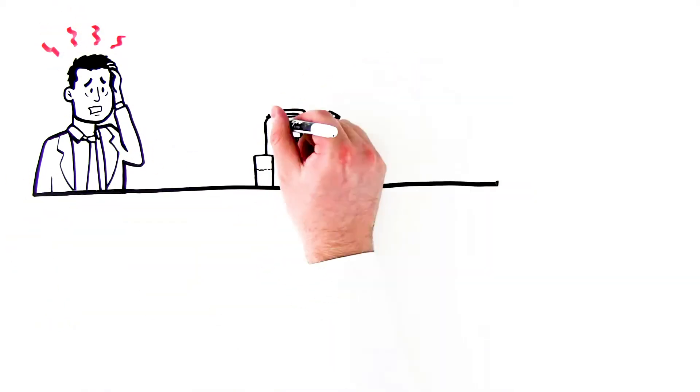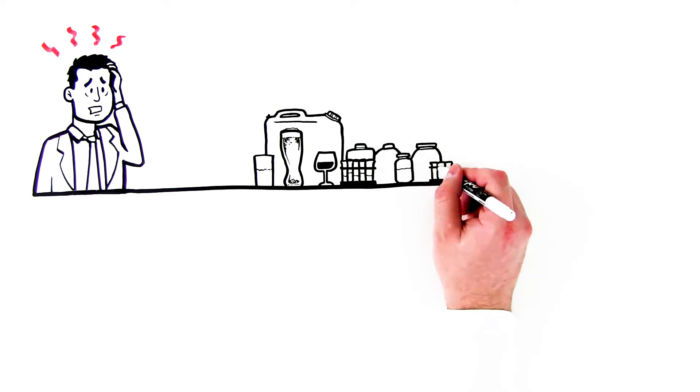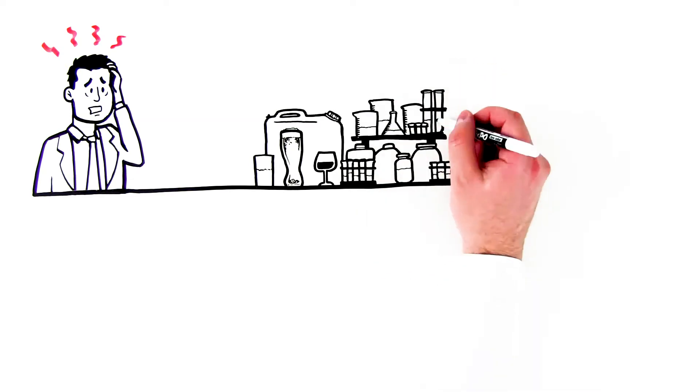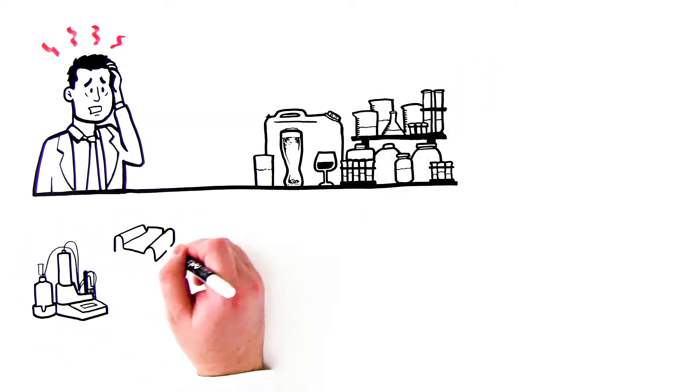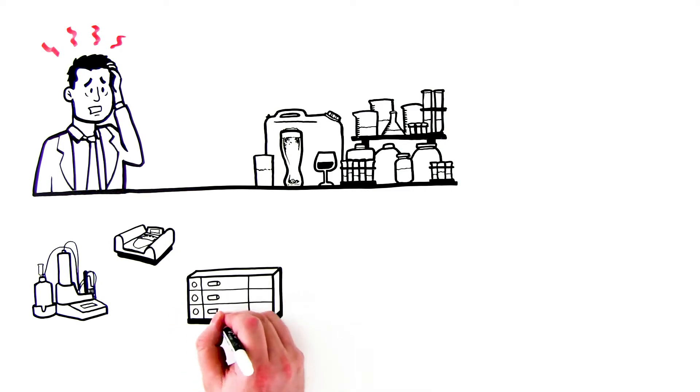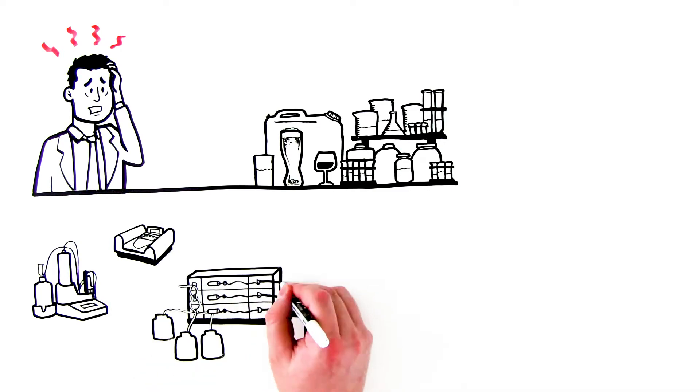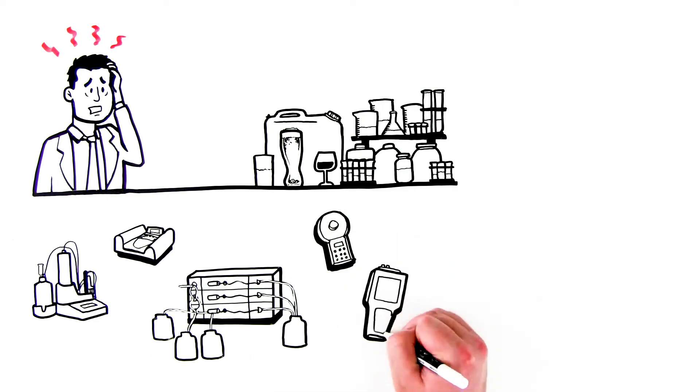Today, his lab is full of samples that need testing for multiple parameters using wet chemistry methods. For that, they'll need to call on titration, photometry, a flow injection analyzer, a pH conductivity meter, and an ion meter.